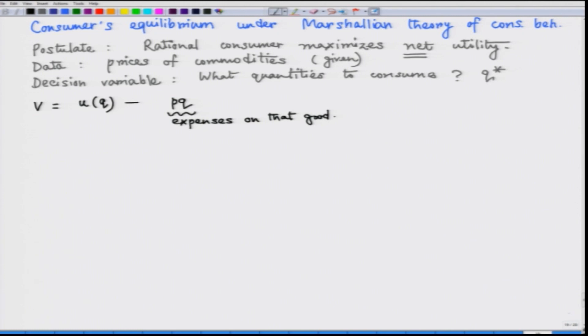So this amount of money is foregone to consume the good Q. Now this amount of money could have been used somewhere else to buy some other commodity maybe. Then there is some marginal utility of money that we need to apply here. In front of this expense on that good, they need to be multiplied and together this lambda PQ will talk about the loss or cost of consumer.